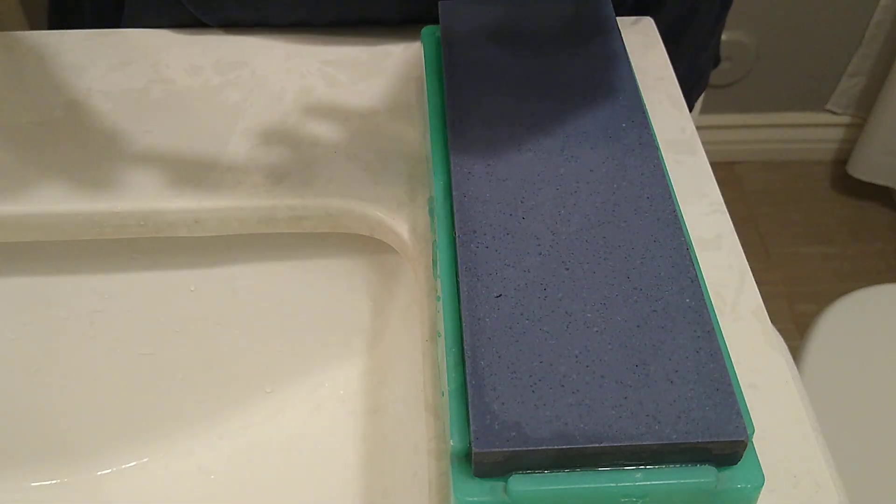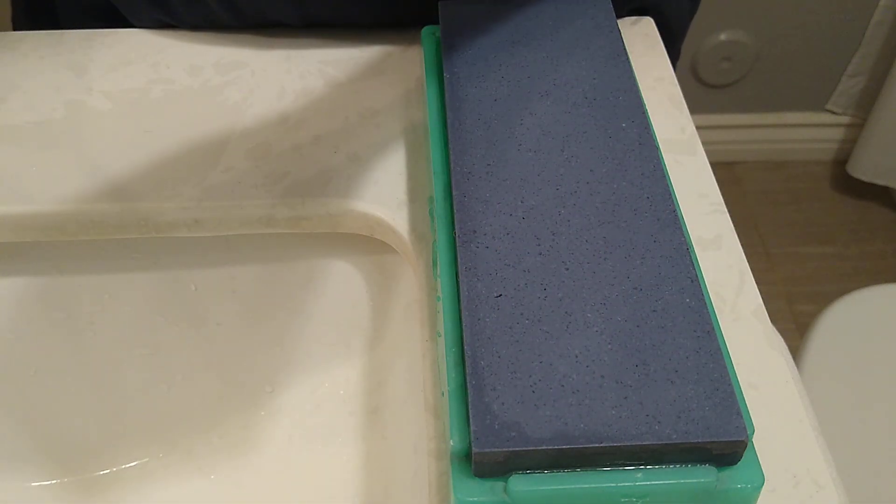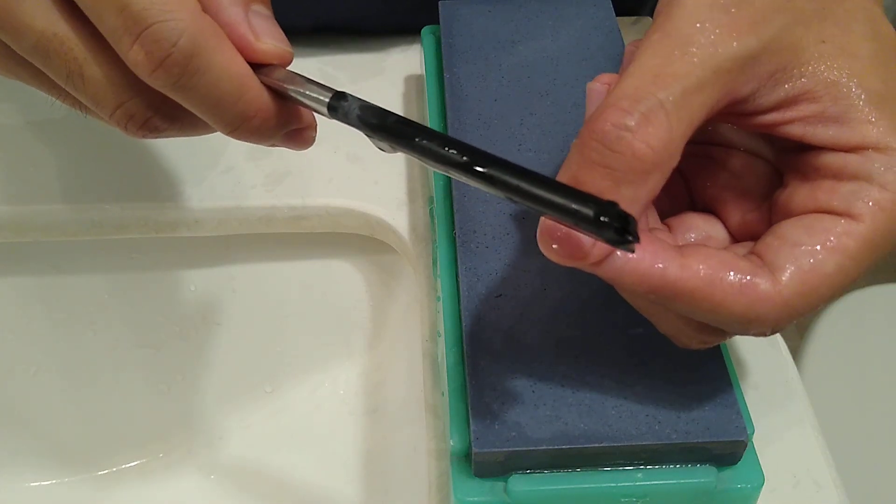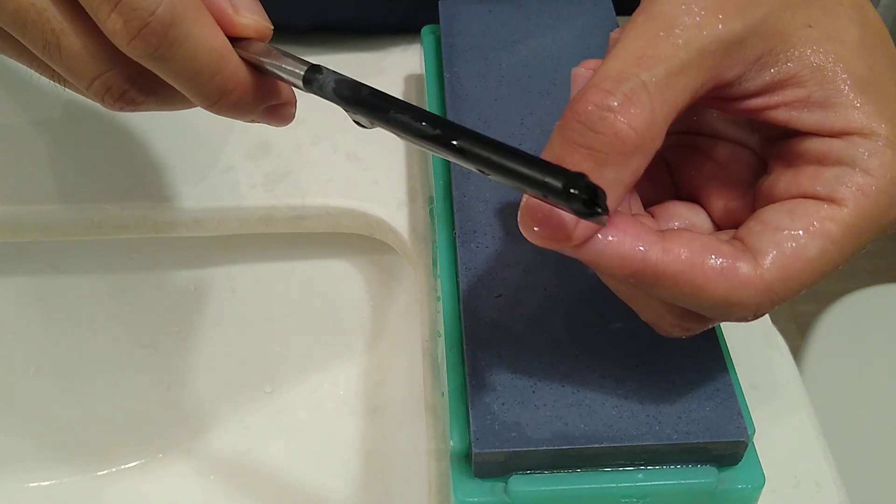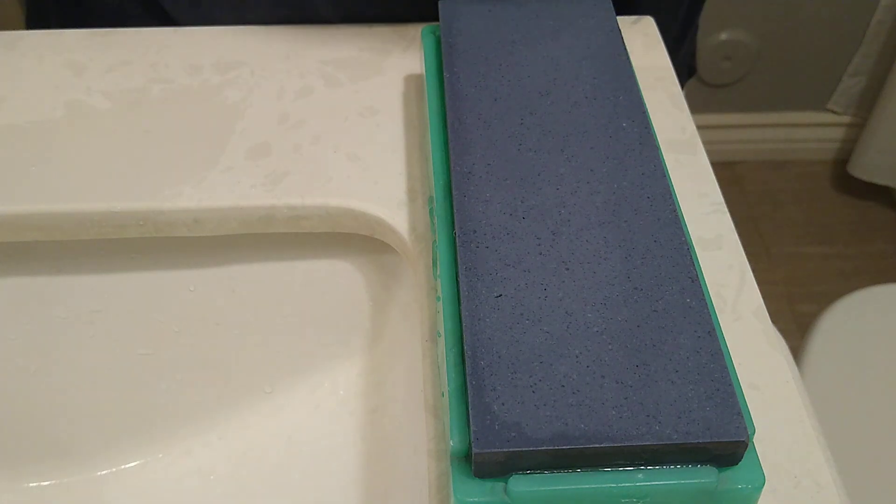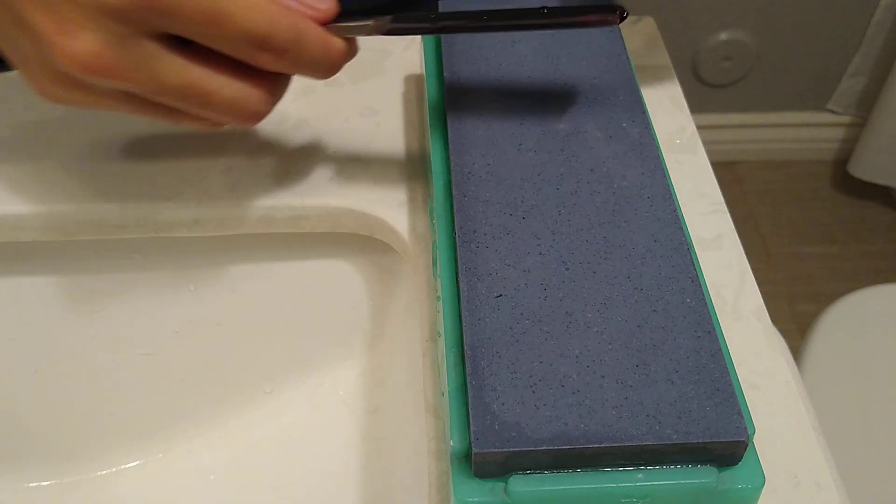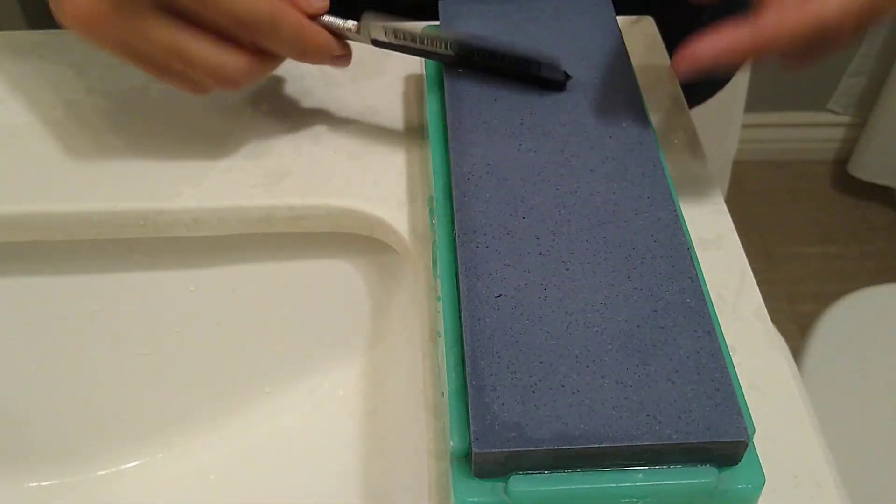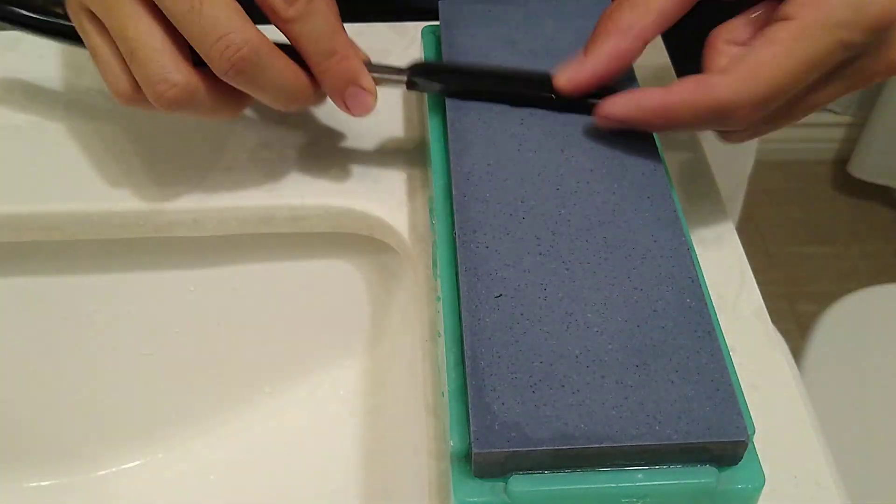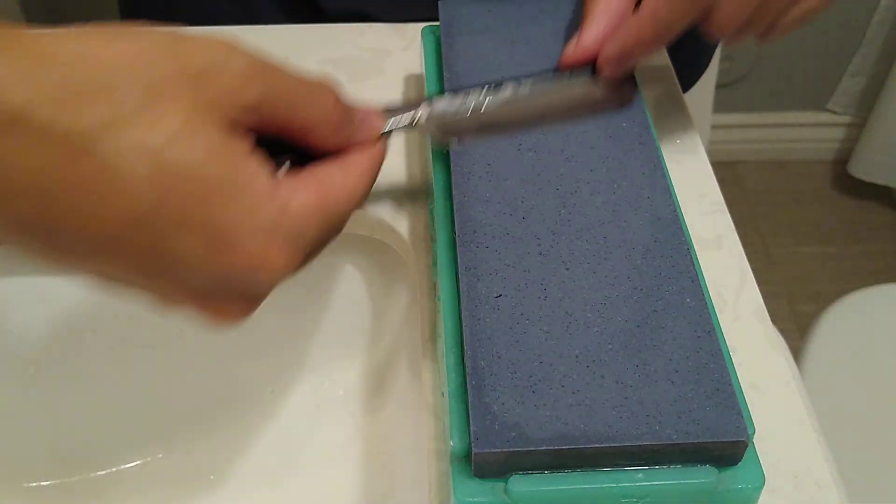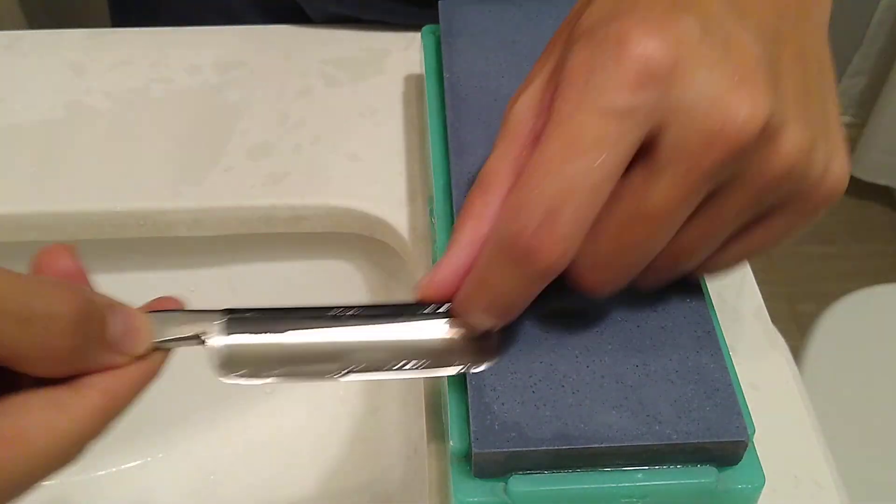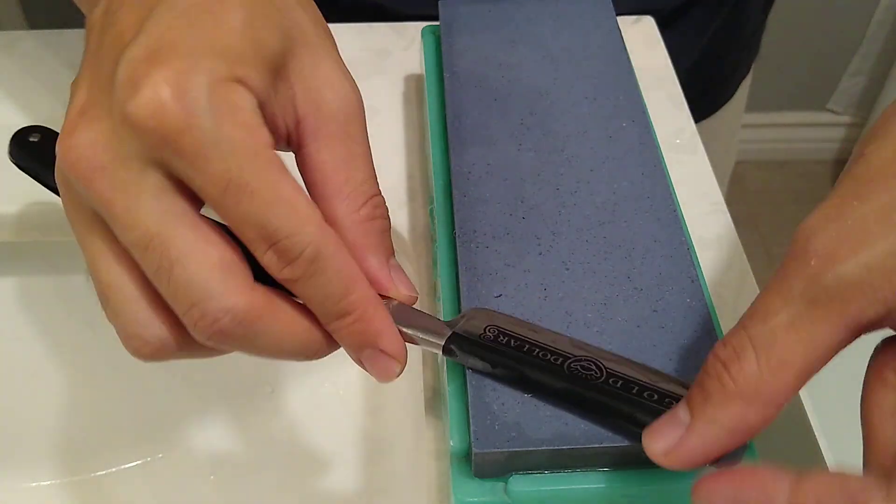I just rinsed off the swarf. I'll rotate the stone. Doing the thumbnail test, it's grabbing onto the thumb pretty well. But it's just not cutting well for some reason. I'm going to continue on here, the same process, going back and forth, X strokes and rolling X strokes, trying to improve the edge, make it sharp and actually cut hair.